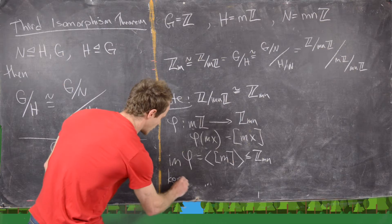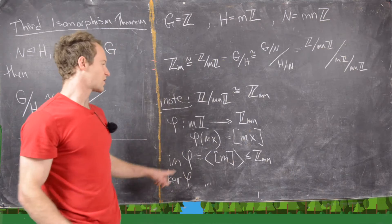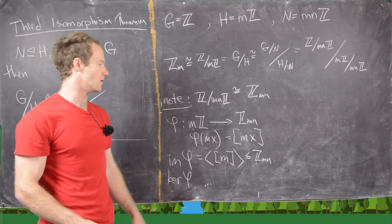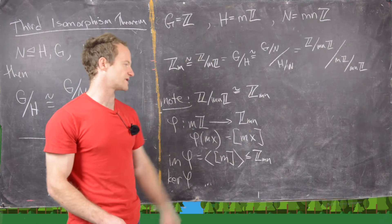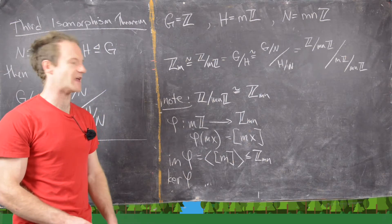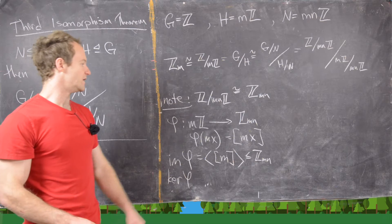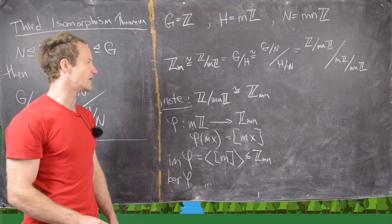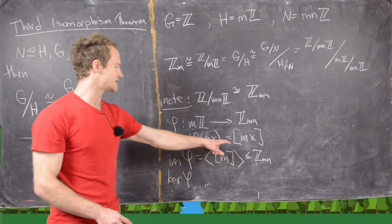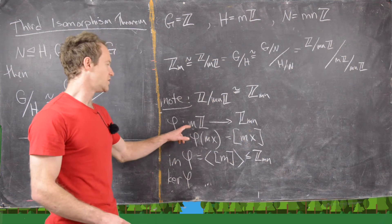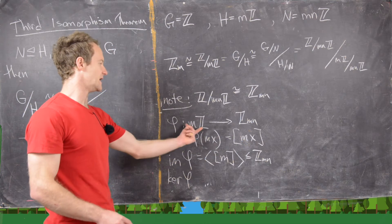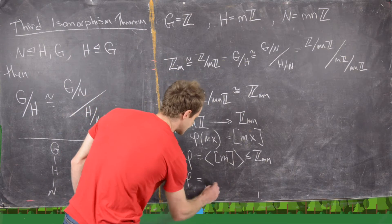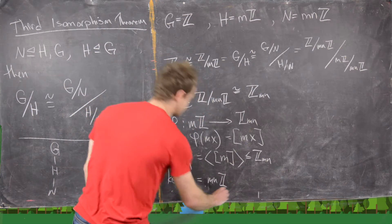Now let's look at the kernel of φ. The kernel is everything mapped to zero — in other words, [mx] needs to be a multiple of MN. If you're in the kernel then you are a multiple of MN inside this group; in other words, the kernel is MNZ.